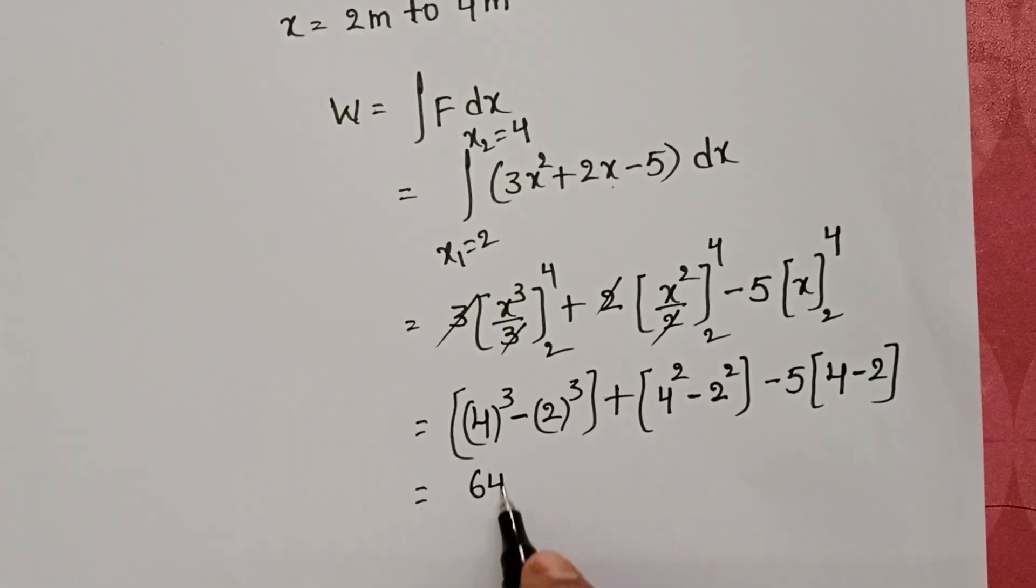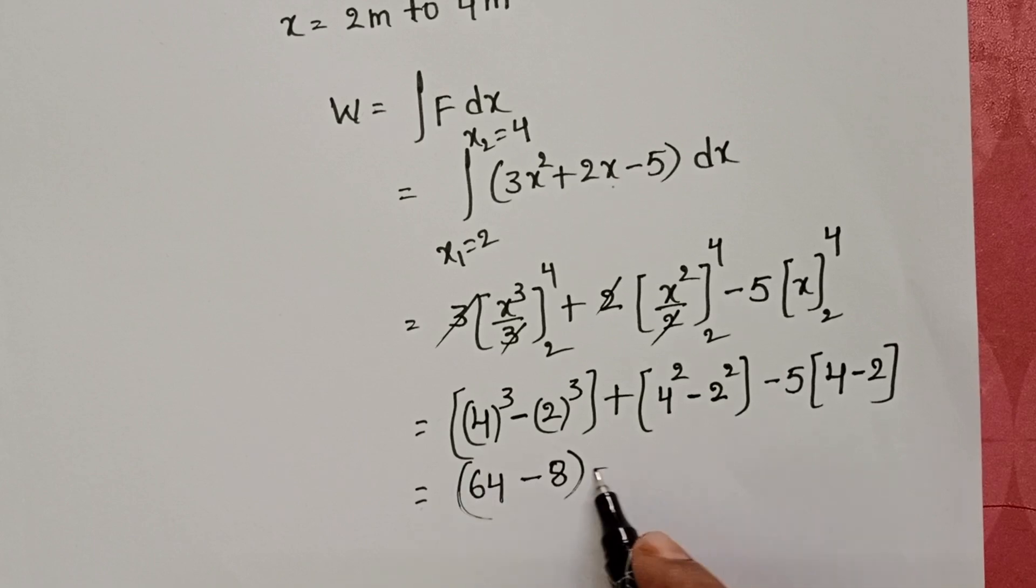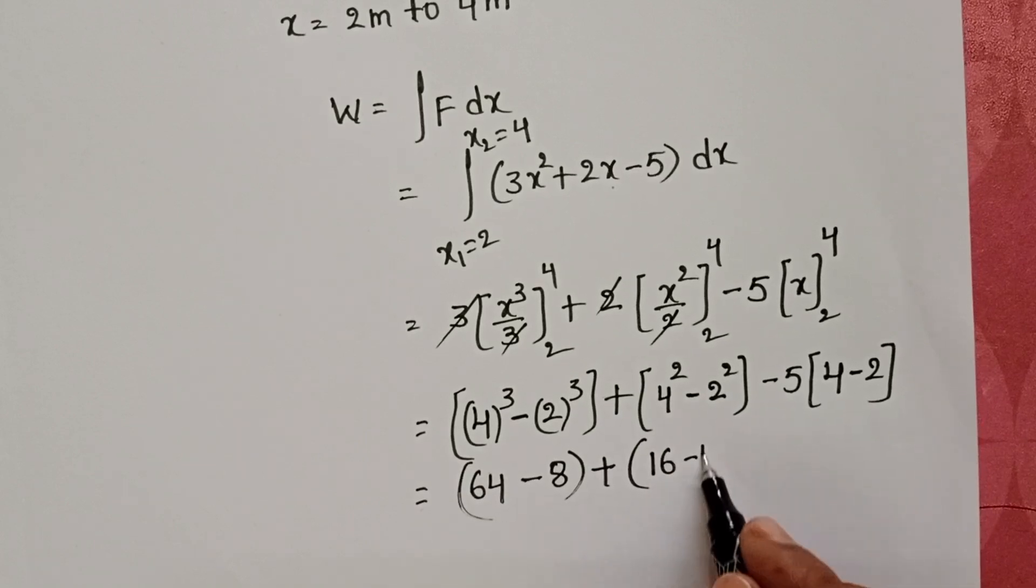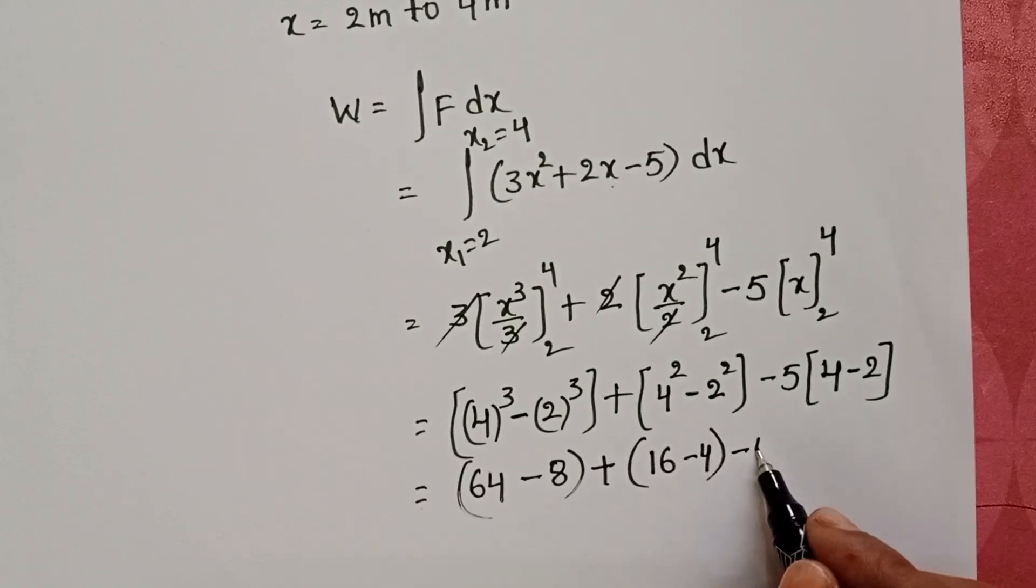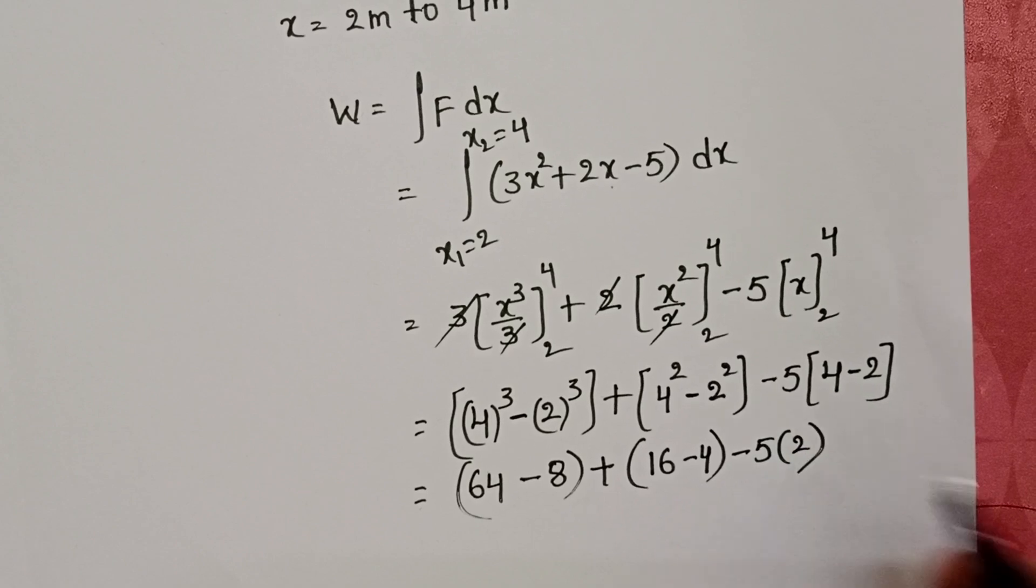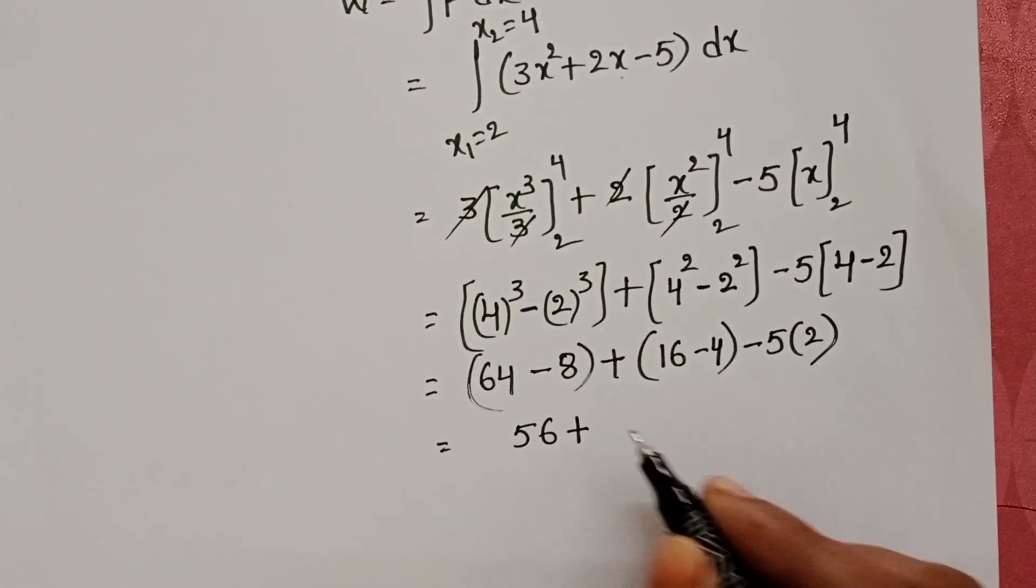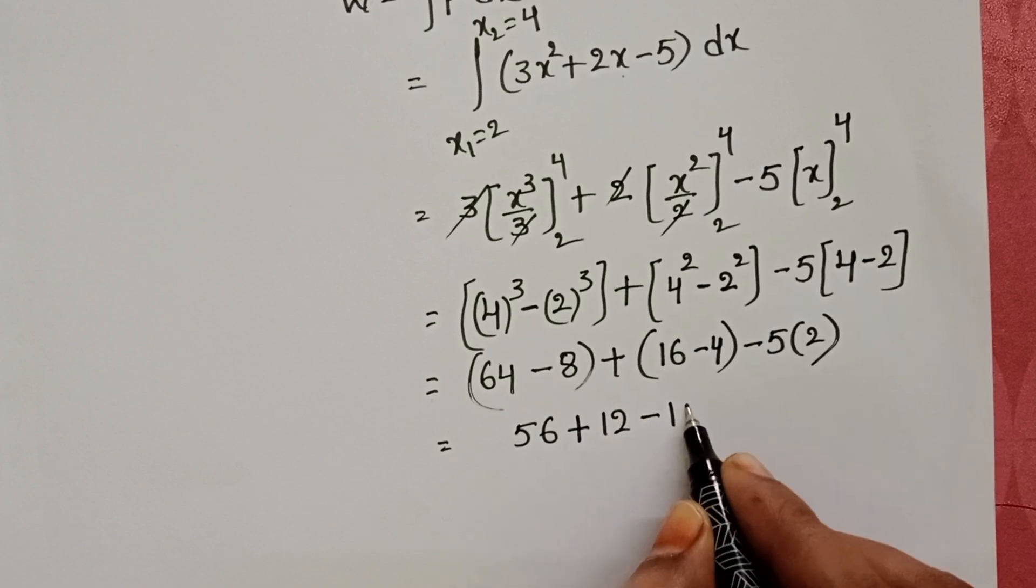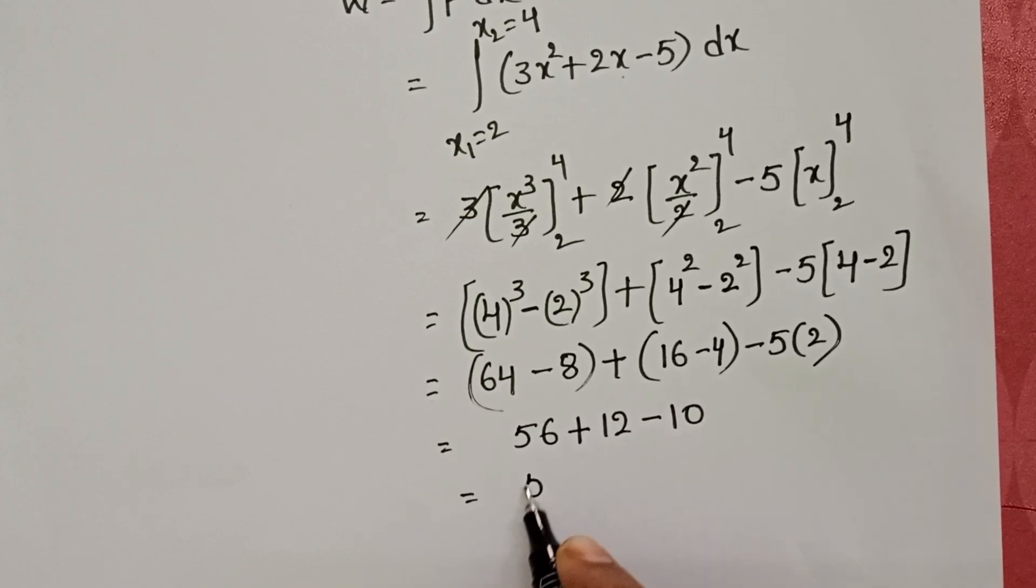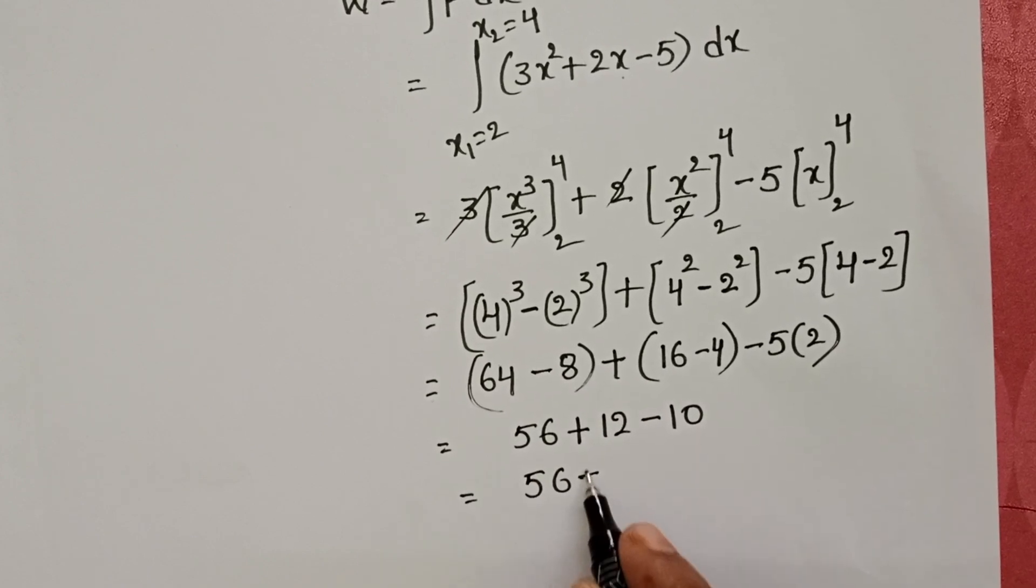4³ is 64 minus 2³ is 8, plus 16 minus 4 minus 5 into 2. 64 minus 8 is 56 plus 12 minus 10. 56 plus 12 minus 10 is 58.